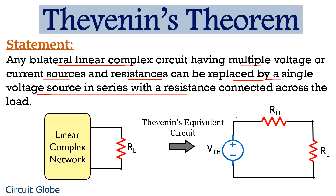Consider the figure shown here. As we can see, a linear complex network is converted into a circuit with a single voltage source in series with an equivalent resistance across the load resistance. This circuit is known as Thevenin's equivalent circuit. This voltage source is known as Thevenin's voltage, denoted by Vth. This equivalent resistance is known as Rth, that is Thevenin's resistance. And this RL is our load resistance.